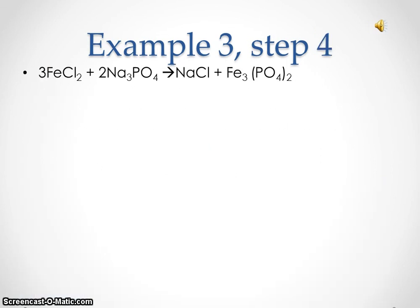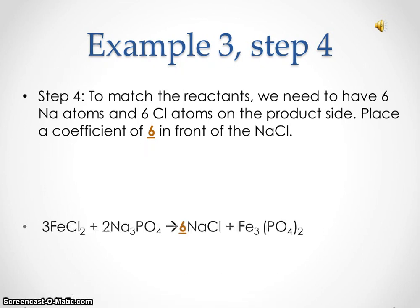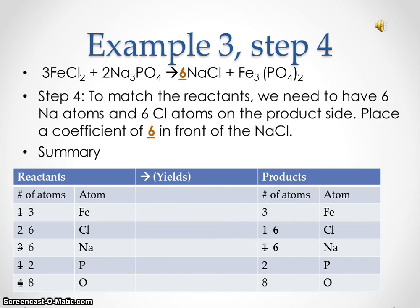Example three, step four. After placing a coefficient of three on the reactant side, we need to have six sodium atoms and six chlorine atoms on the product side. Place a coefficient of six in front of the NaCl on the product side. On the reactant side, we now have three iron atoms, six chlorine atoms, six sodium atoms, two phosphorus atoms, and eight oxygen atoms. On the product side, we have three iron atoms, six chlorine atoms, six sodium atoms, two phosphorus atoms, and eight oxygen atoms. Balanced!